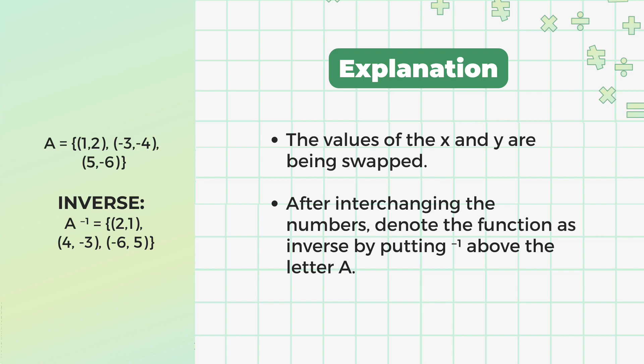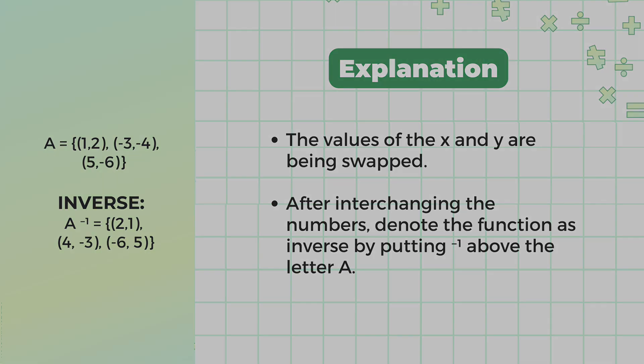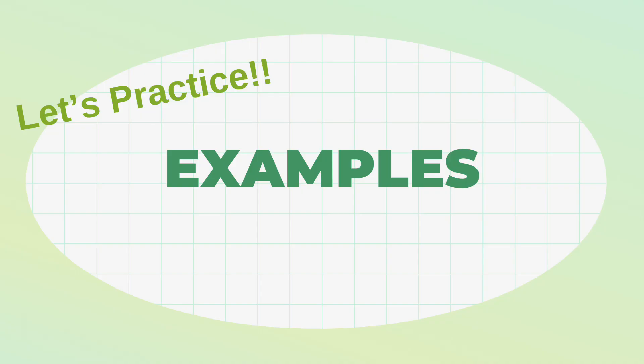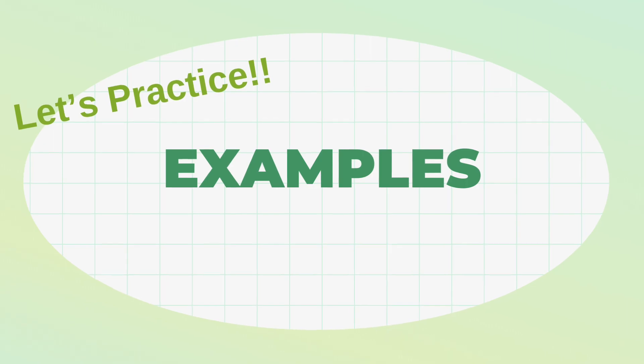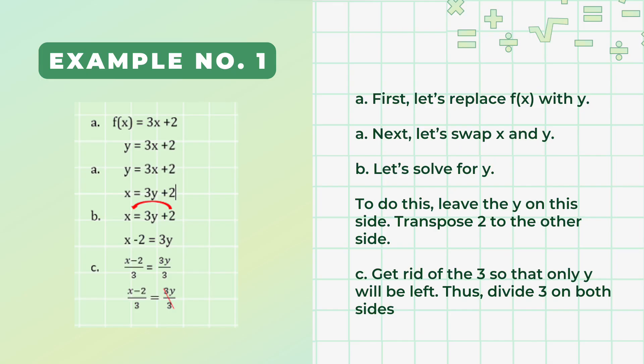Now that we have an idea of how an inverse function works, let's practice some examples with the steps as our guide. First, let's replace f(x) with y. Next, let's swap x and y. Let's solve for y — we need just y on one side and must get rid of the other terms.